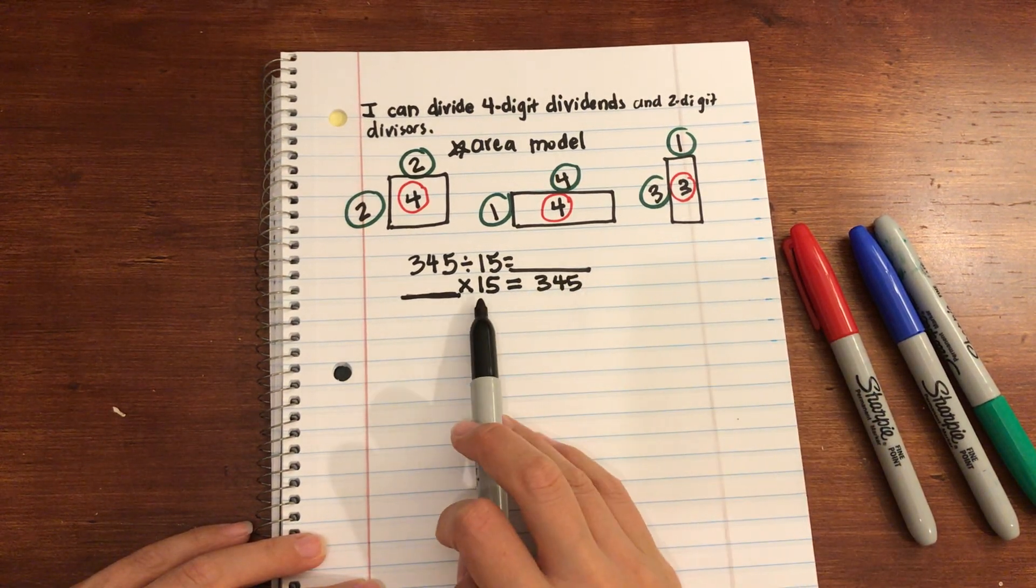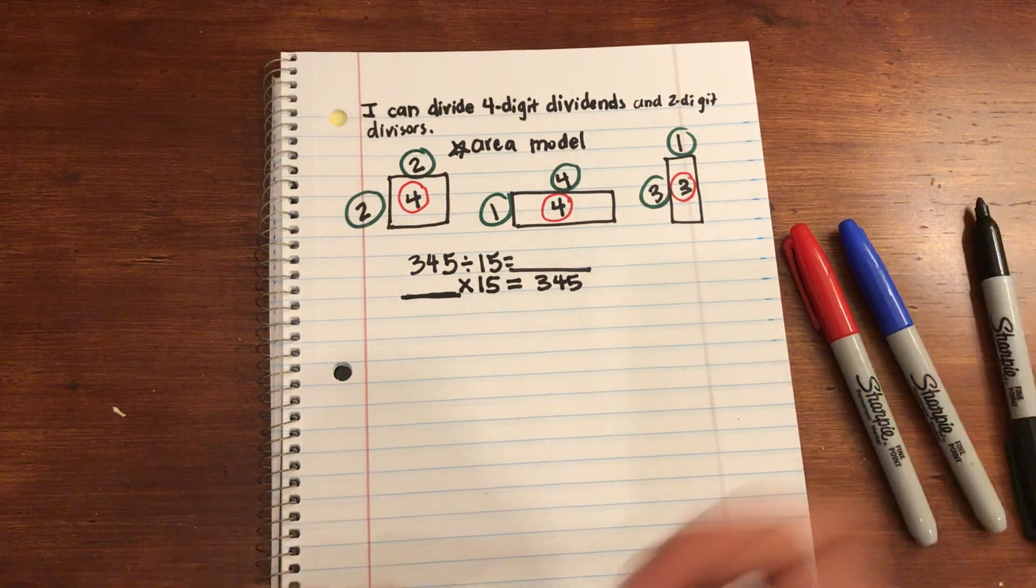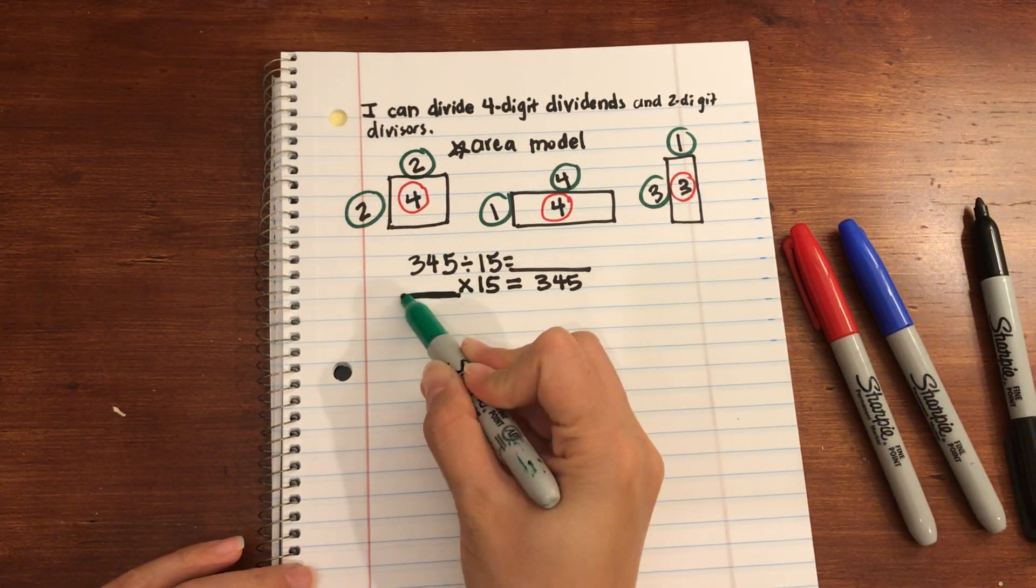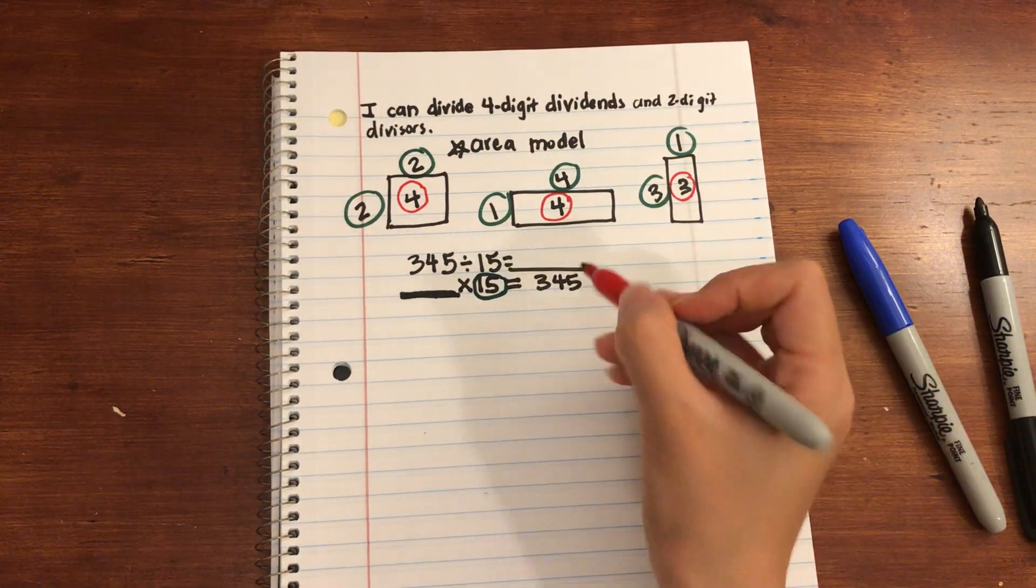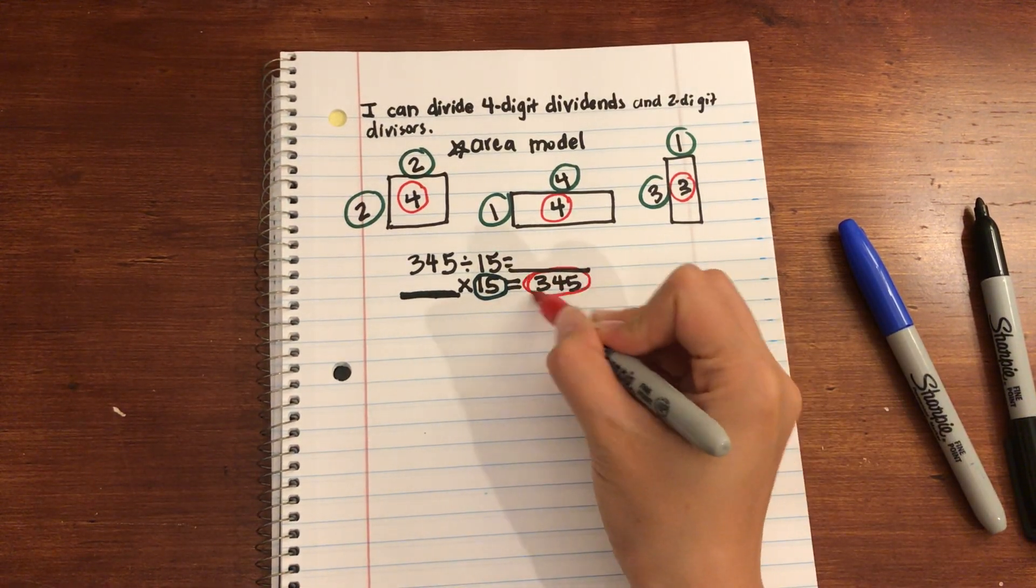So as you can see, the green are the factors, right? So right here is my factor. Right here is my factor. And the red is going to be the product.